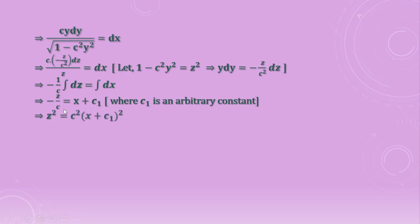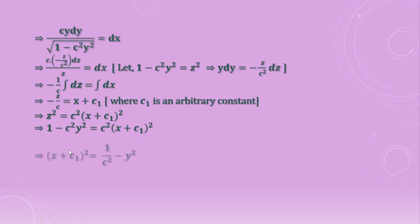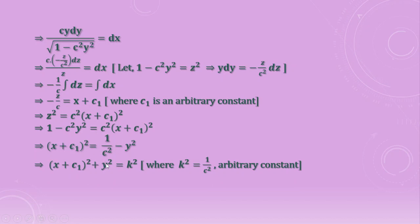Squaring both sides: z² equals c²(x + c1)². Substituting back z² equals 1 minus c² y², we get 1 minus c² y² equals c²(x + c1)². Dividing both sides by c²: (x + c1)² equals 1/c² minus y². Taking k² equals 1/c² as an arbitrary constant, we arrive at (x + c1)² + y² equals k², which is the equation of a circle.